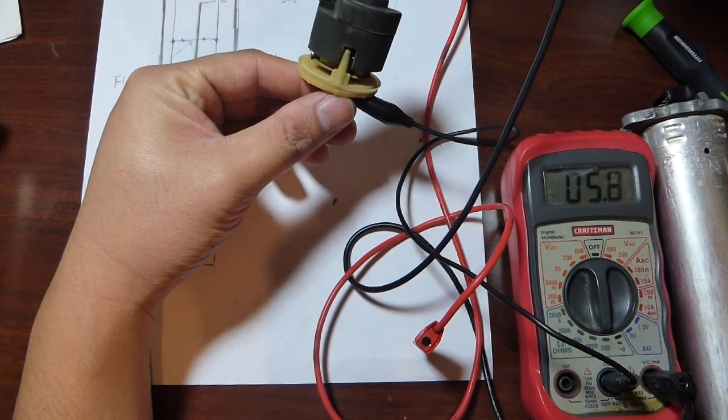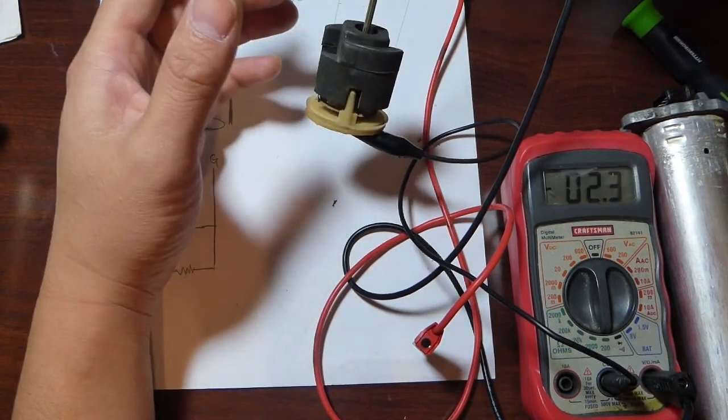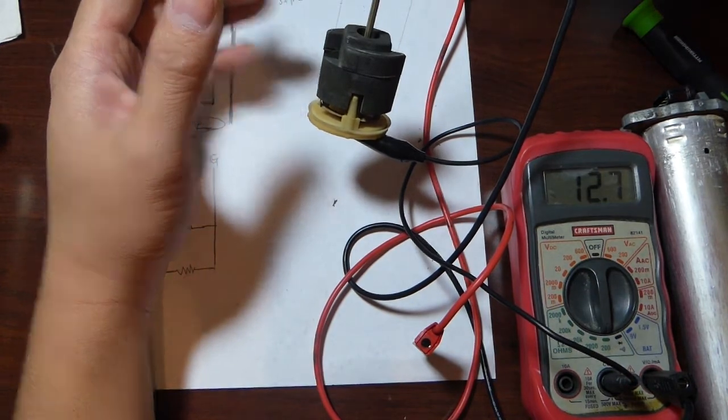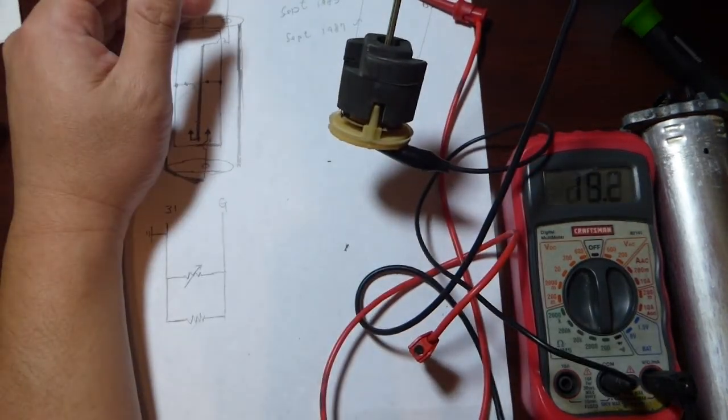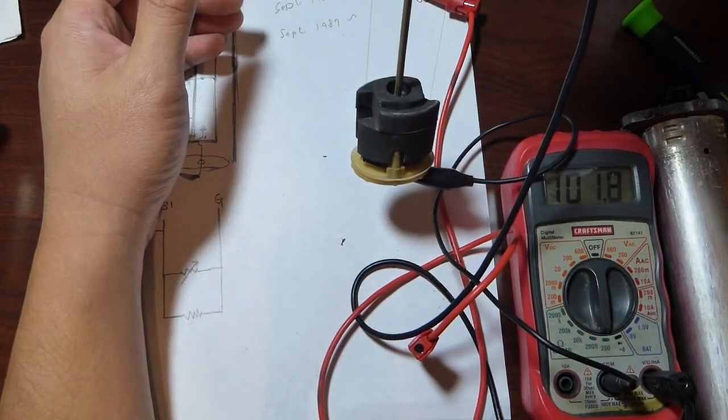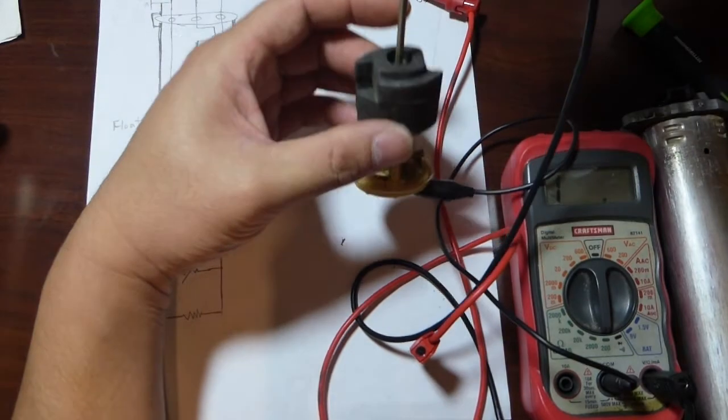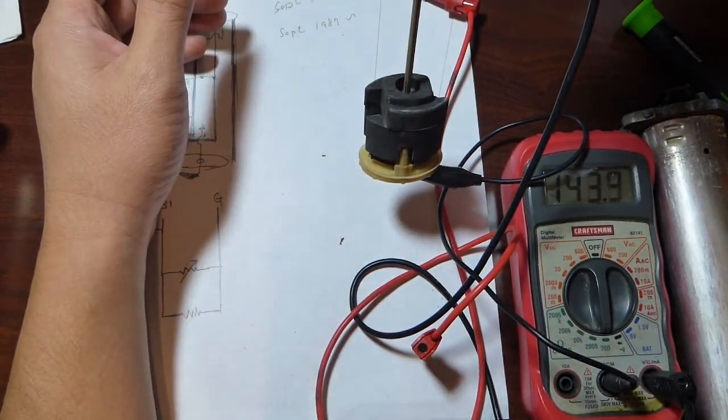Very low resistance there. It doesn't have to be super low to turn on the light bulb. Anything below 100 will turn that light bulb on with no problem at all.